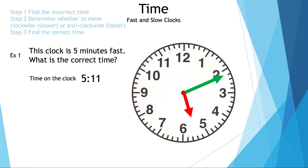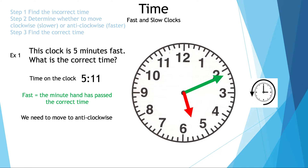Now let's talk about the vocabulary — what does fast mean? Fast means the minute hand has passed the correct time. So we need to go backwards, or anti-clockwise, to find the correct time.